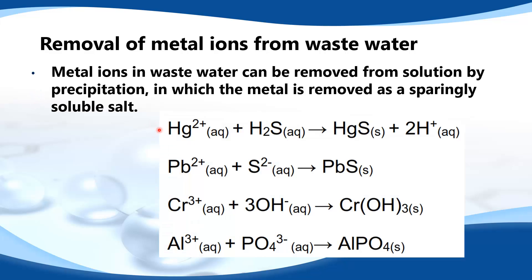Here are some examples. Mercury ions can be removed from solution by reacting with hydrogen sulfide gas, which forms insoluble mercury sulfide. Lead ions can also be removed by reacting with hydrogen sulfide gas to form insoluble lead sulfide. Chromium ions can be reacted with hydroxide ions to form insoluble chromium hydroxide, and aluminium ions can be reacted with phosphate ions to form insoluble aluminium phosphate.